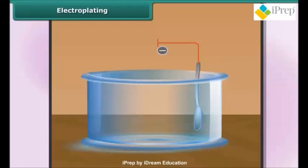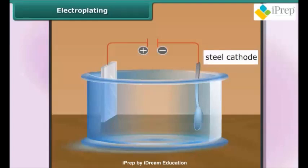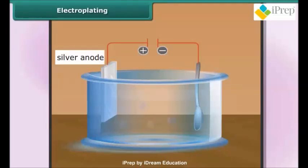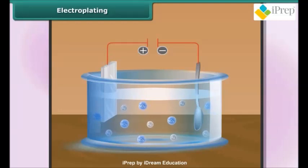The positive terminal is connected to the bar of the metal, for example pure silver. Thus the spoon acts as the cathode in the electrolysis, while the bar of the metal acts as the anode. The electrolyte is a solution of salt that contains the ion of the anode metal, for example silver nitrate.